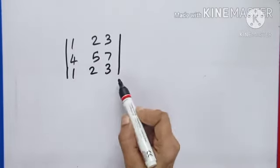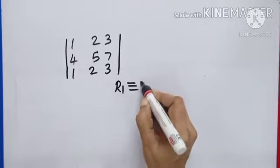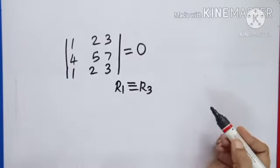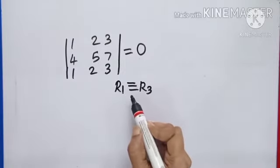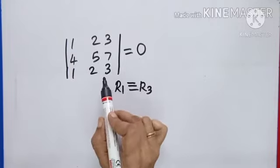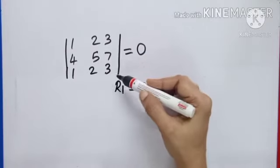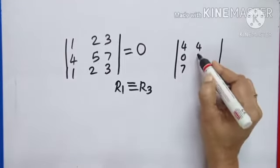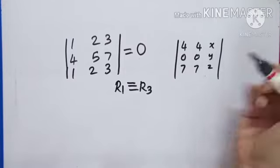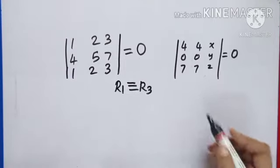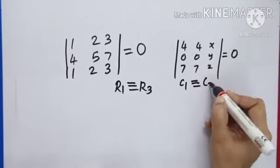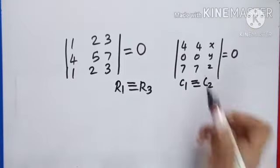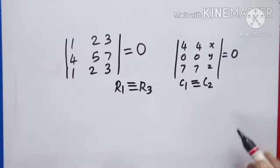Property 3: If any two rows are identical, the determinant is 0 — no need to expand. For example, if row 1 and row 3 are identical, immediately write the answer as 0. Similarly, if two columns are identical, the answer is 0. For instance, in a matrix with first column 4, 0, 7 and second column also 4, 0, 7, regardless of what appears in the third column (x, y, z — any values), the answer is 0 because columns 1 and 2 are identical.